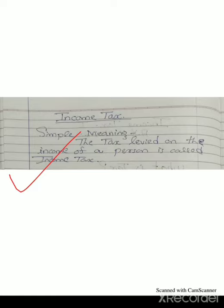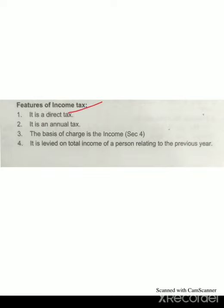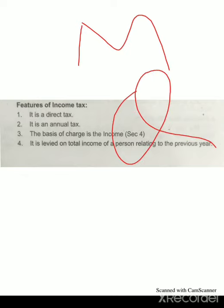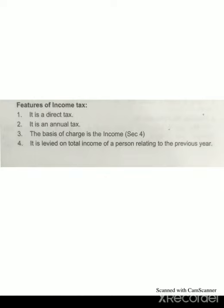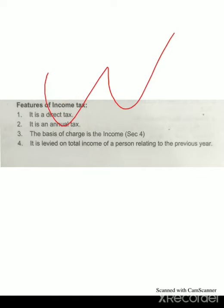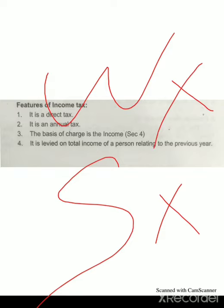Income tax cannot be shifted to another person. The characteristics — or features — of income tax: the first feature is it is a direct tax, directly applicable to a person. The second feature is it is an annual tax — it is not monthly, not quarterly, not semi-quarterly; it is a 12-month tax, meaning annual. The third feature is the base of charge is income — this tax is charged on the basis of income only, not wealth, not any service.